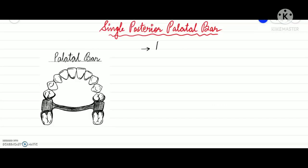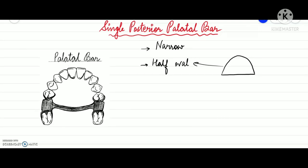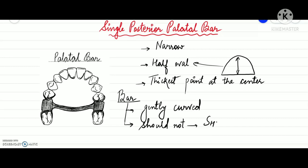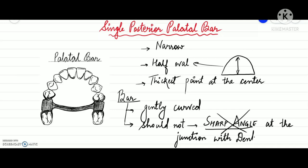The single posterior palatal bar is narrow and half oval in cross section, with its thickest point at the center. The bar is gently curved and should not form a sharp angle at the junction with the denture base.